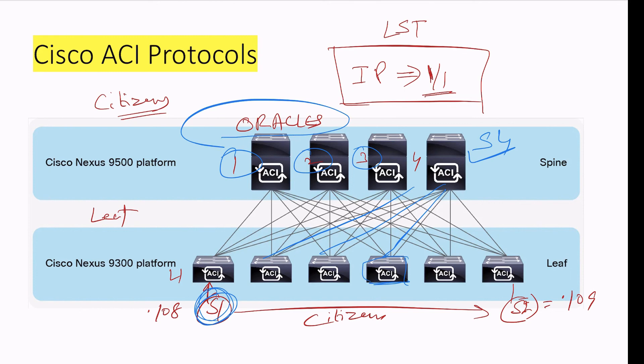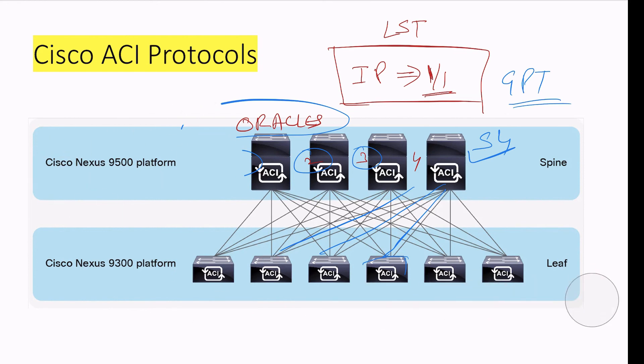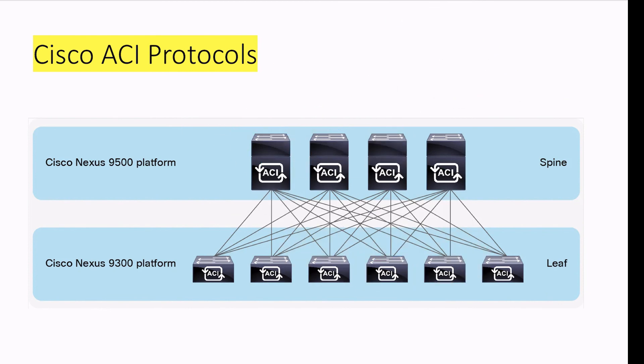So these oracles will maintain a proxy table known as global proxy table. So eventually, this is the way each spine will come to know about the devices which are connected to leaves. So it helps in synchronizing the details. So this is achieved with the help of COOP protocol, Council of Oracle Protocols. Spines are known as oracles. Leaves are known as citizens. Just an overview for you.